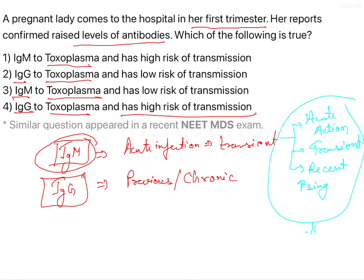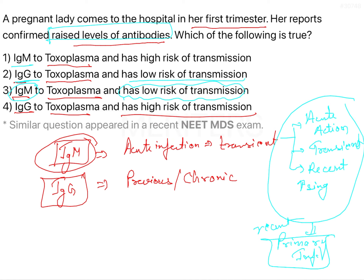All of this tells you a recent primary infection of toxoplasmosis — a primary infection which is very recent, because you see the raised level of antibodies. So we can rule out two options from here. IgM to toxoplasma with high risk of transmission, IgG to toxoplasma with low risk, and IgM to toxoplasma with low risk of transmission. Since IgM is present, that means there is a recent primary infection and the antibodies are increasing, which carries a high risk of transmission. So we can rule out option 3.